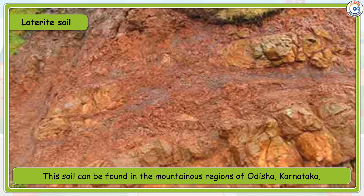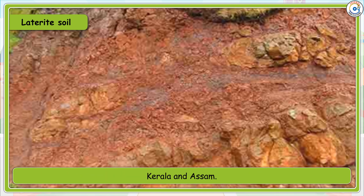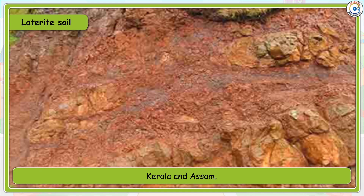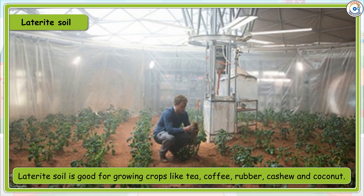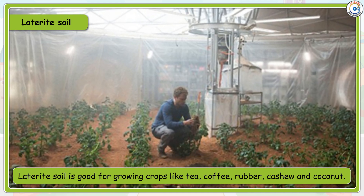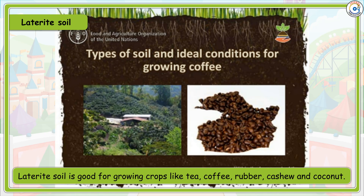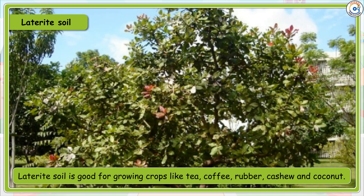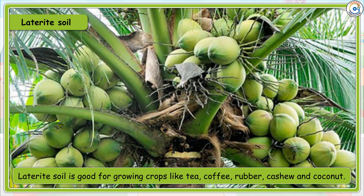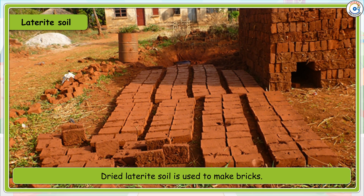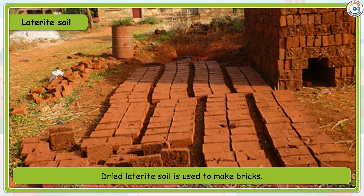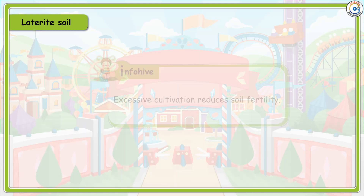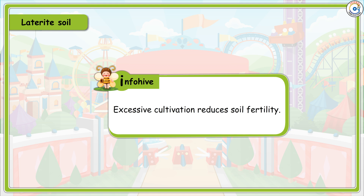Laterite soil can be found in the mountainous regions of Orissa, Karnataka, Kerala, and Assam. It is good for growing crops like tea, coffee, rubber, cashew, and coconut. Dried laterite soil is used to make bricks. Excessive cultivation reduces soil fertility.